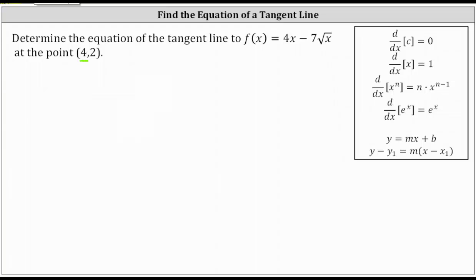Before we find the derivative function, let's rewrite the square root of x using a rational exponent. The square root of x is equal to x to the power of 1/2. So the given function f(x) can be written as f(x) = 4x minus 7 times x to the power of 1/2.